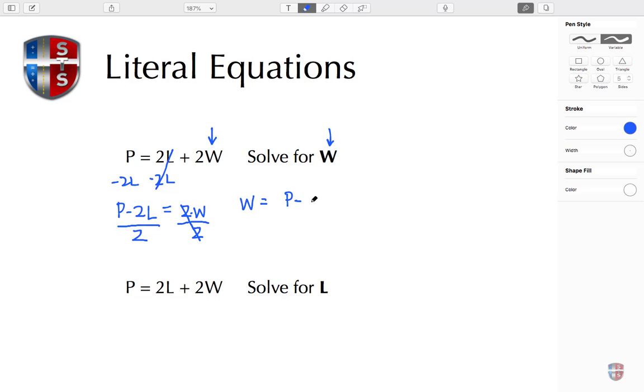So W equals P minus 2L over 2, or it can be shown as P divided by 2 minus 2L divided by 2, which simplifies down to just L because these twos will cancel. So it can be P over 2 minus L. You may see it in this form or in this form.